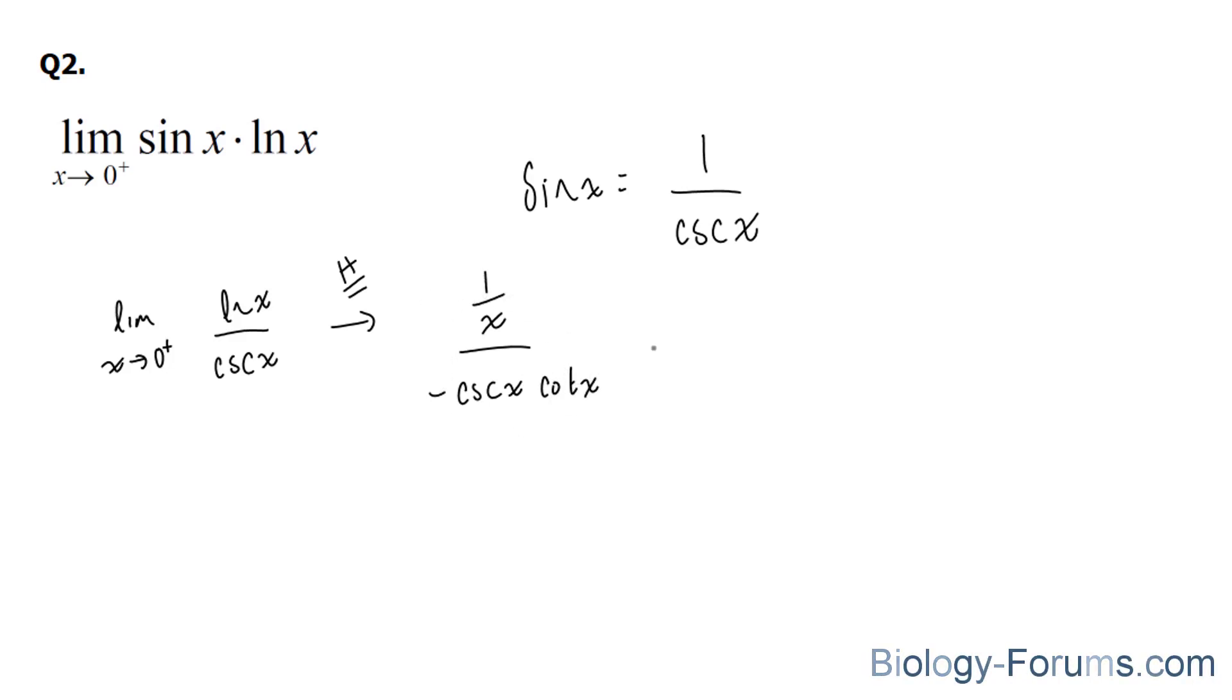So if we rearrange this, we end up with 1 over x times cosecant x cotangent x. And of course, cosecant is equal to 1 over sine. So we can write down sin x at the top.